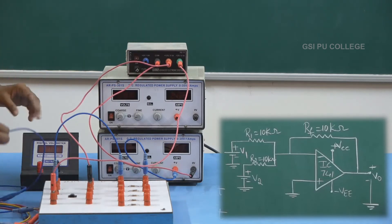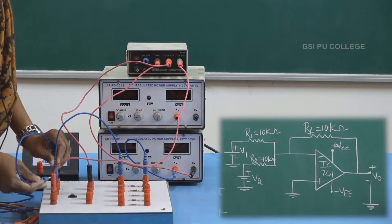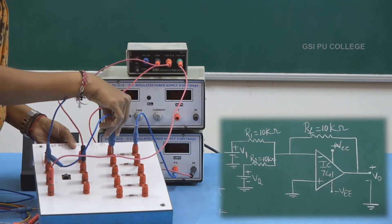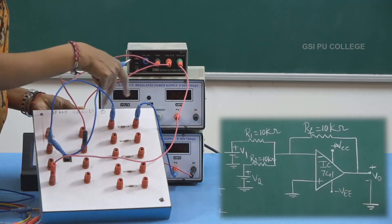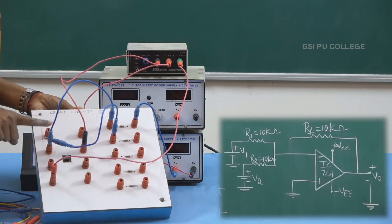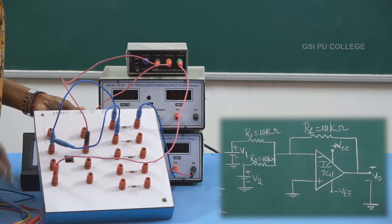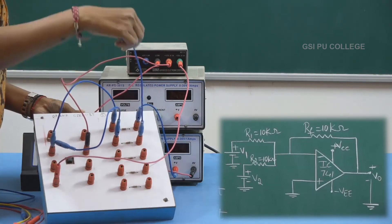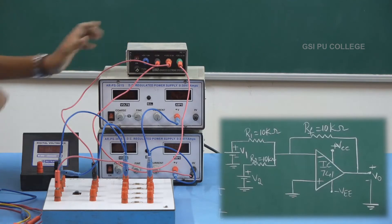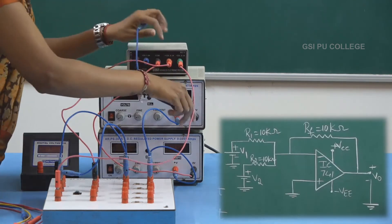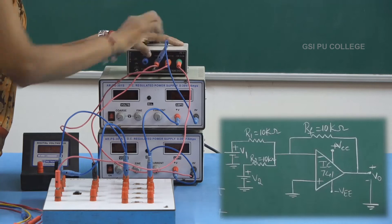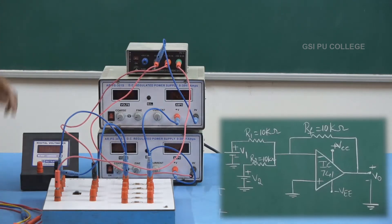Next, pin number 2 is connected to another resistor R2 — also 10 kilo ohm — by shorting a wire to the same pin number 2. The other end of resistor R2 is connected to the positive terminal of V2. Then the negative terminal of V2 is grounded — shorted to the common terminal of the dual power supply.